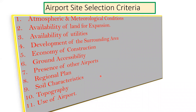In this lecture we will see what is the site selection criteria for the airport. The points we need to consider are: atmospheric and meteorological conditions, availability of land for expansion, availability of utilities, development of the surrounding area, economy of construction, presence of other airports, regional plan, soil characteristics, topography, and finally the use of airport.